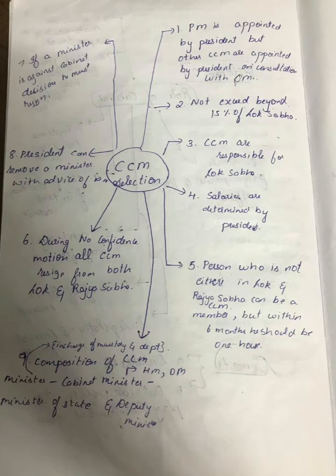The seventh important point is that if a minister is against a cabinet decision, he must resign. The eighth important point is that the president can remove a minister with the advice of the prime minister — any member of the council of ministers can be removed by the president with consultation of the prime minister.